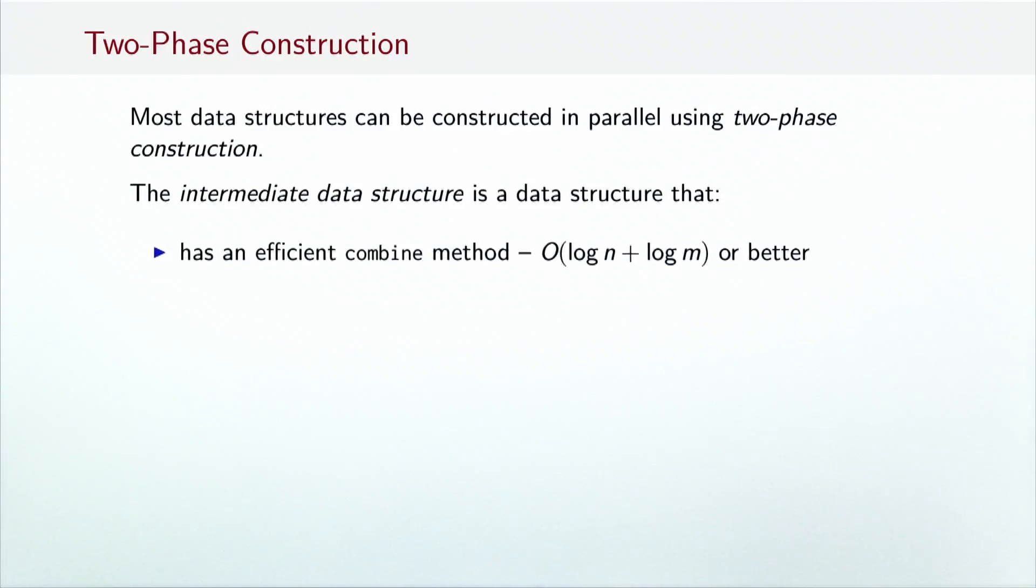First, the intermediate data structure has an efficient combine method. Its running time is O(log n + log m) or better. Then, the intermediate data structure has an efficient plus-equals method. This ensures that individual processors can efficiently modify the data structure. For sequences, the meaning of plus-equals is appending an element to the sequence, while for sets, the plus-equals method is standard set addition.